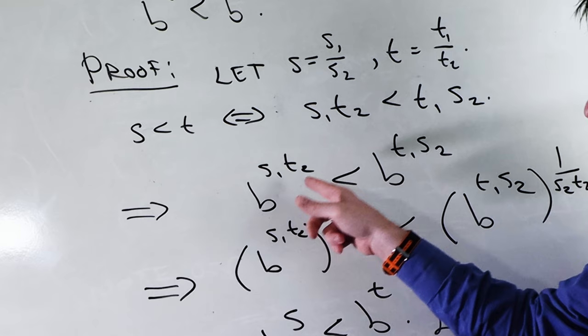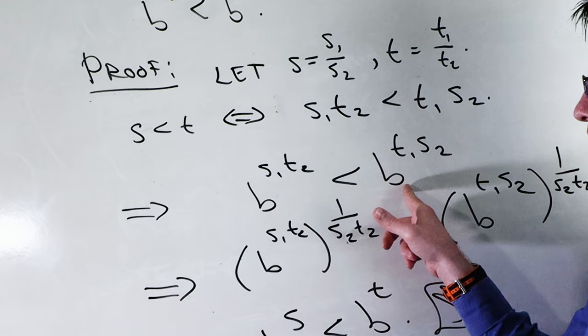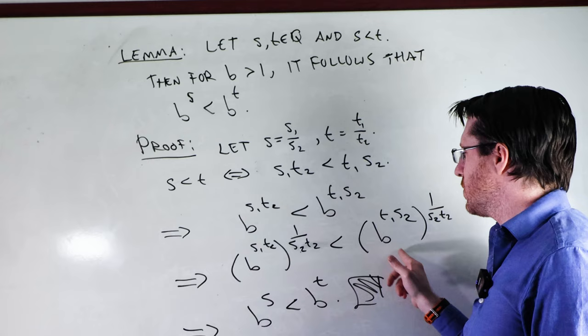Each of these are integers and so we know that for B greater than 1, we have B raised to these terms preserves the inequality. We know from the proof of theorem 1.21 that if we take the same root of each side of the inequality, it is preserved. So take the T2S2 root and we get the claim.